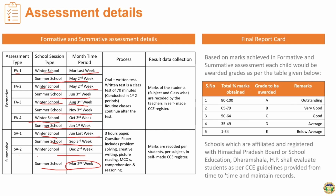Regarding the process involved in formative assessment: oral tests and written tests are conducted. The written test is a class test of 70 minutes, conducted in the first two periods, then routine classes continue. For summative assessment, question papers include problem solving, creative writing, picture reading, multiple choice questions, comprehension, and reasoning. Results are recorded subject-wise and class-wise in the self-made CCE register.